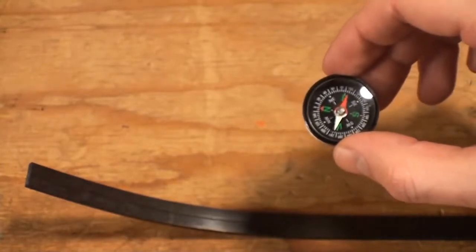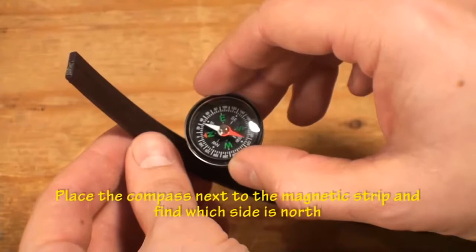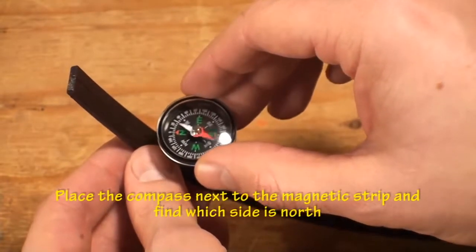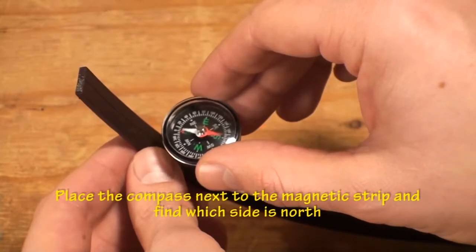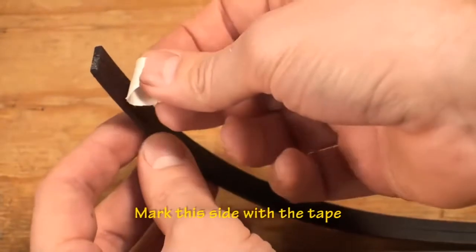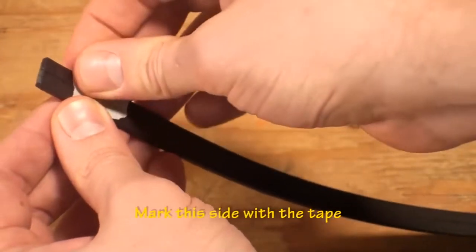Next, you will need both 23 and a half inch long high force magnetic strips and the compass. Place the compass next to the strip to determine which side is north. Mark this side as north with the masking tape and repeat with the other magnetic strip.